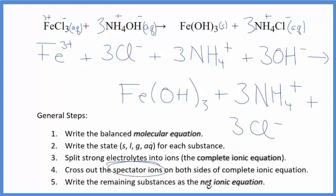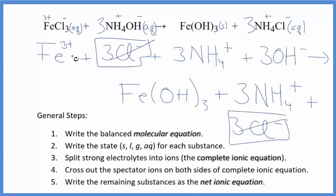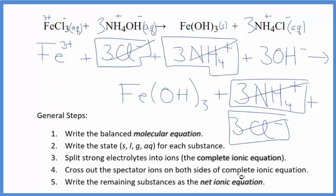Now we can cross out spectator ions. They're on both sides. They haven't changed, so we're not interested in them. Reactants and products. Here's three chloride ions and in the products. Those are gone. We have three ammonium ions and in the products again. So those are gone. But what's left, that's the net ionic equation for FeCl3 plus NH4OH.